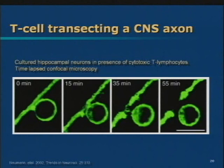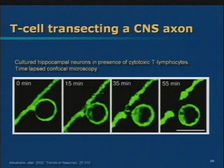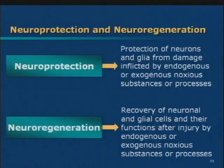The immune system can cause this damage. Here's an interesting slide: the green line is an axon, and the green circle is a T cell — one of the white blood cells in your bloodstream that can cross in and be part of this injury process. It shows this T cell in contact with an axon in a culture. Over a period of a little less than an hour, it initiates the cutting of that axon. This cell is damaging this nerve fiber, and then it cuts it. This is the process we want to stop.